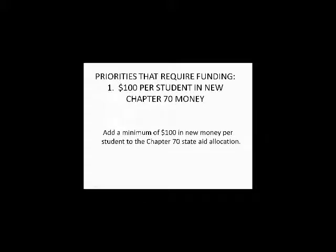Within the FY16 budget proposal by Governor Baker in February, he called for a $20 per student increase to the Chapter 70 funding line. The House Ways and Means Committee, which released their budget just last week and will be debating while we are at the State House on the 29th, calls for a $25 increase per minimum. Chapter 70 funding is the lifeblood of all our school districts, providing the important resources our districts need to provide a quality education. Each year we are advocating for at least a minimum of $100 increase within this line item.